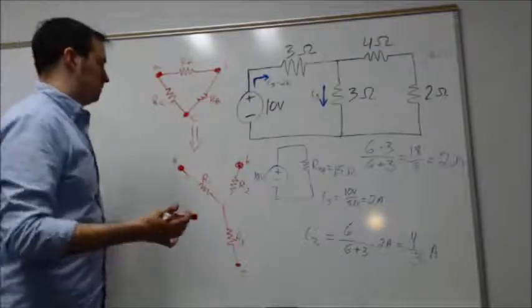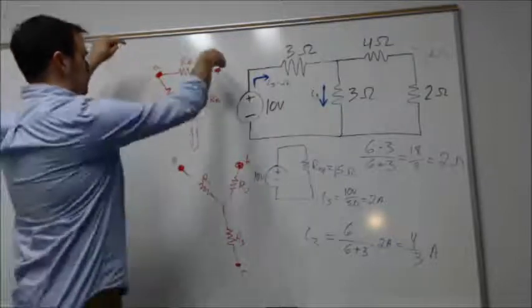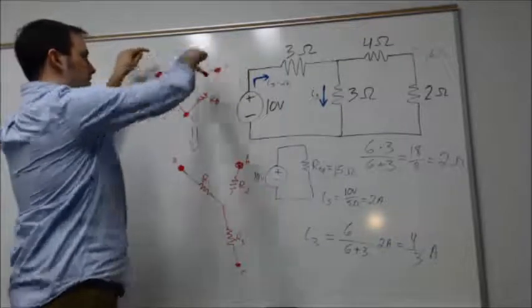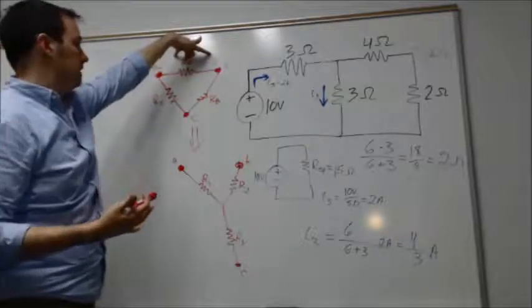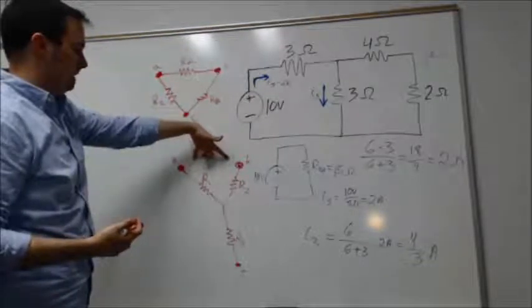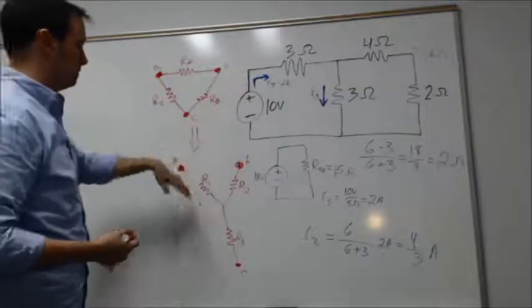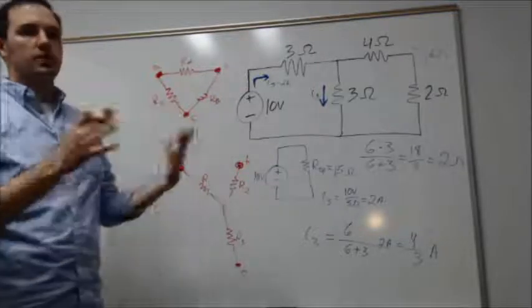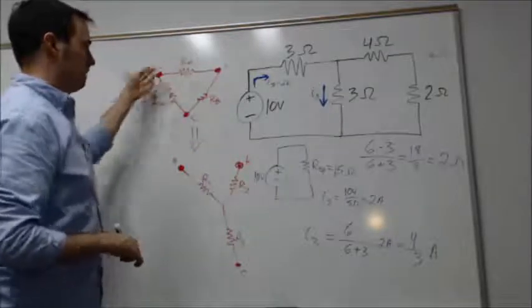We went through in class the equations that we would use to enable us to do that. They all boil down to coming up with what is the equivalent resistance between two nodes in the delta circuit, and equating that to the equivalent resistance between those nodes in the Y configuration. We do that between each of the two nodes and ultimately solve for how to convert from R_a, R_b, R_c to R_1, R_2, R_3.